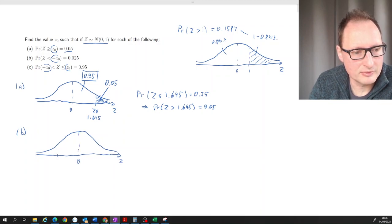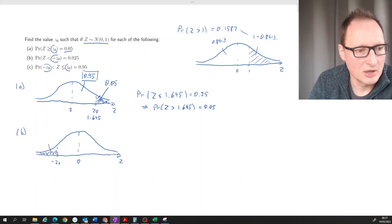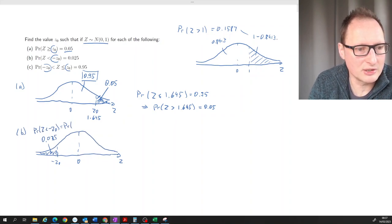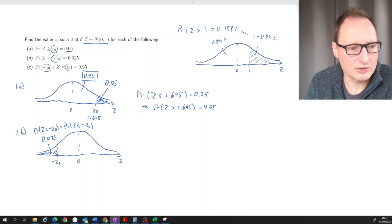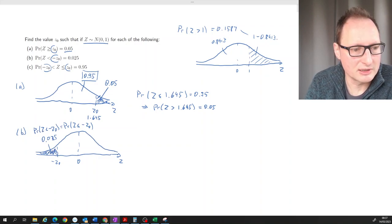We have the mean at zero, some negative value -z₀ here, and the probability that z is smaller than that value is 0.025. Actually, you should recognize that since we're talking about a continuous distribution, z is smaller than or equal to -z₀, because for a continuous distribution the probability that we get exactly a certain value is always equal to zero.